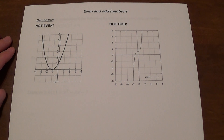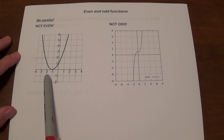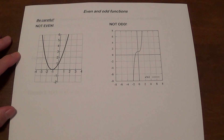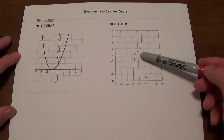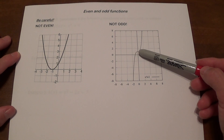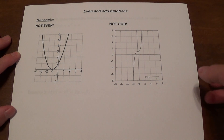You need to be careful: just because the graph is symmetric does not mean it's going to be necessarily even or odd. Even functions need to be symmetric with respect to the y-axis. This graph here appears to be symmetric with respect to the line x equals negative 1 — it may be symmetric, but it's not even because it's not symmetric with respect to the y-axis. Similarly, this graph may appear to have rotational symmetry, but it's not odd because it's not symmetric with respect to the origin.